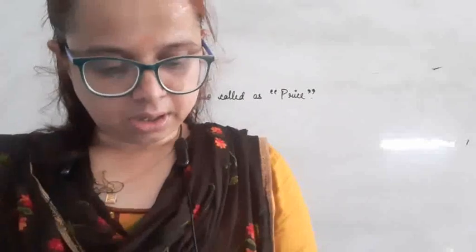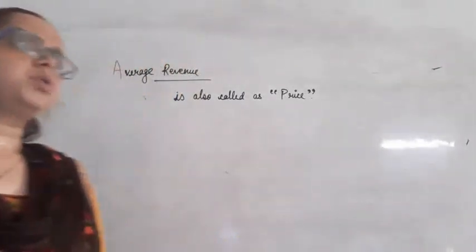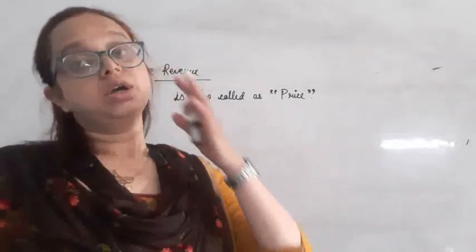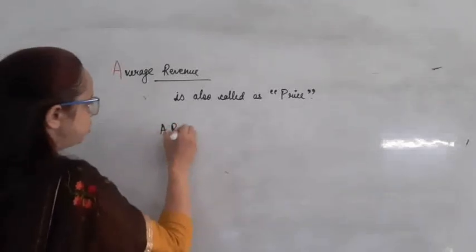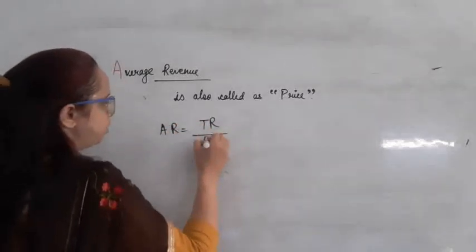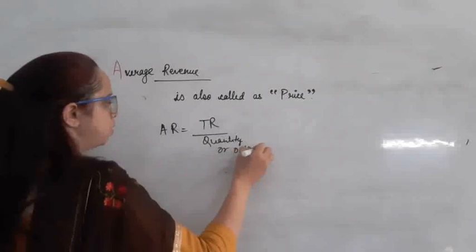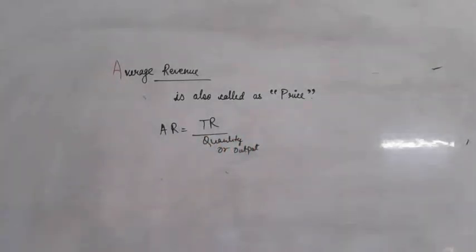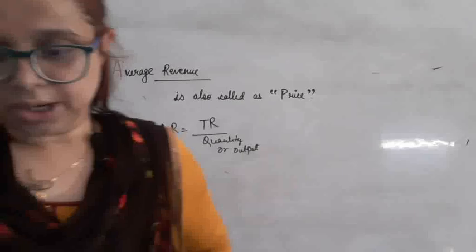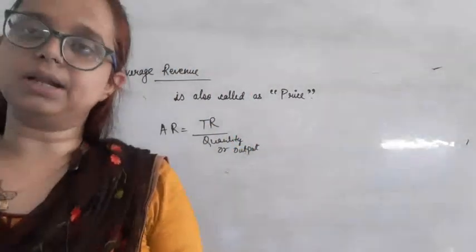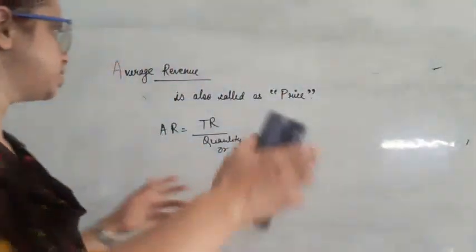How do we calculate average revenue? Since it is per unit income, average revenue is equal to total revenue divided by the quantity of output. AR = TR ÷ Q.